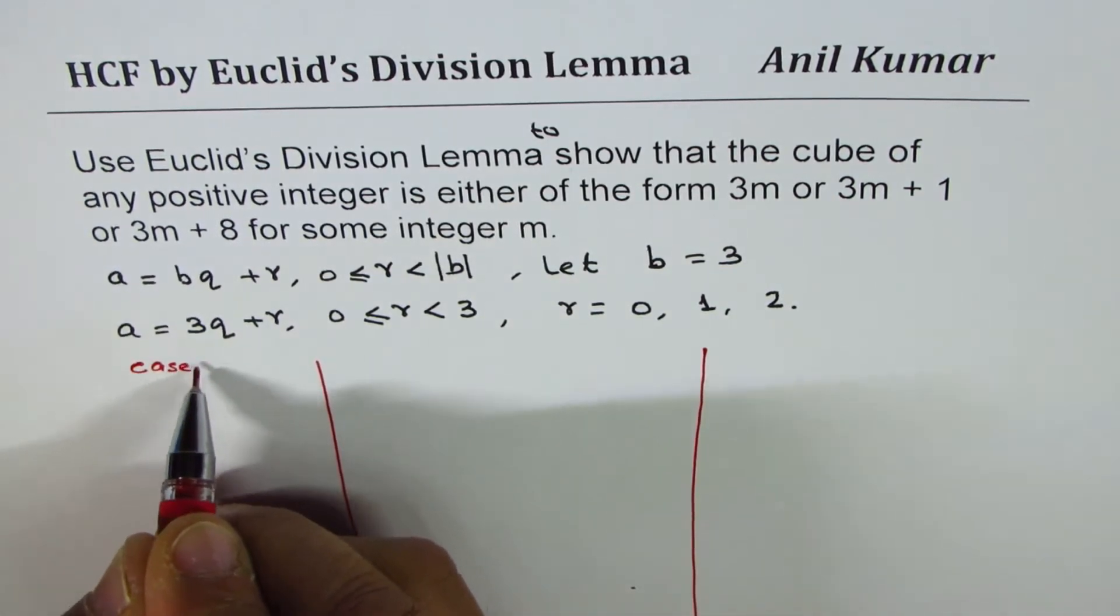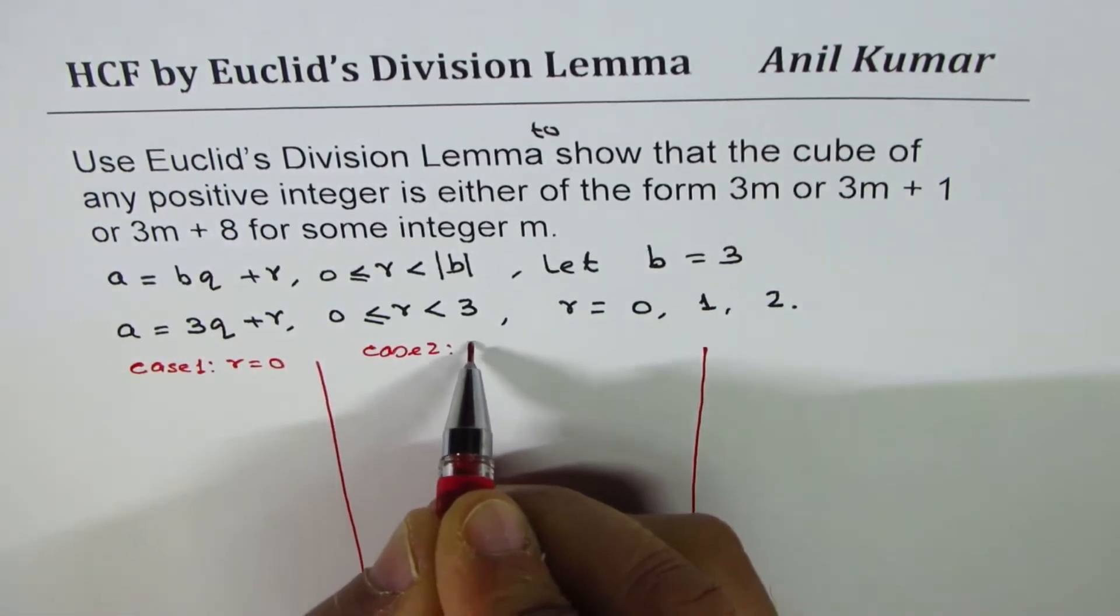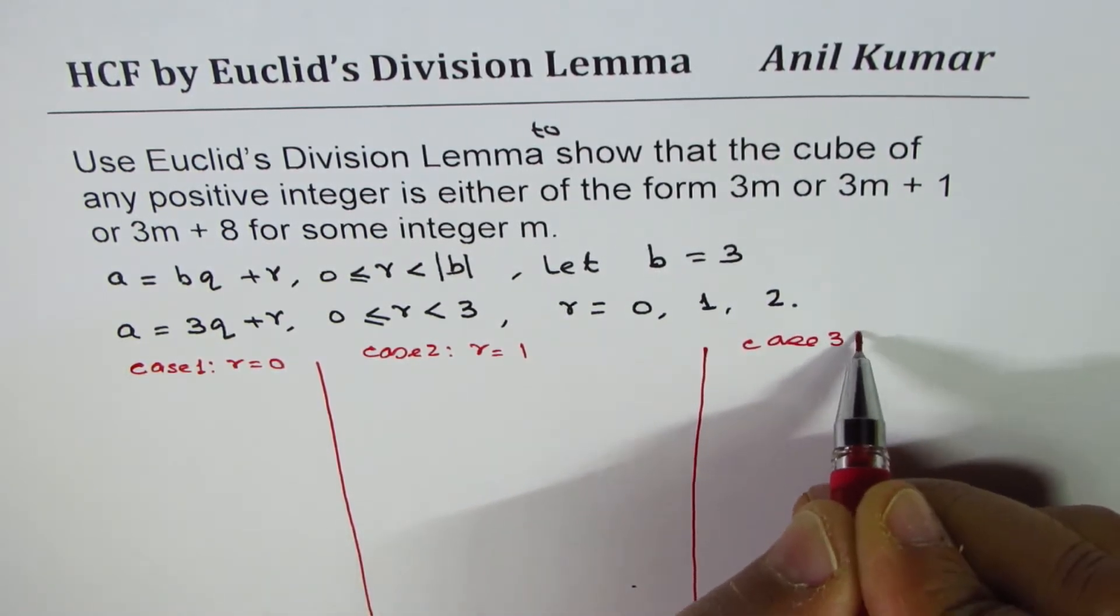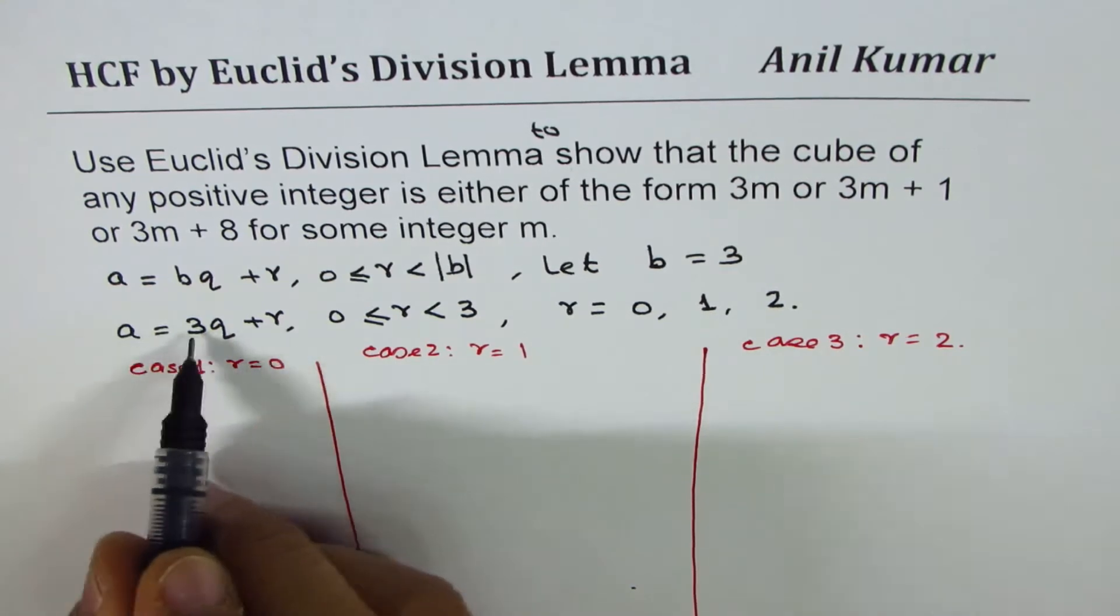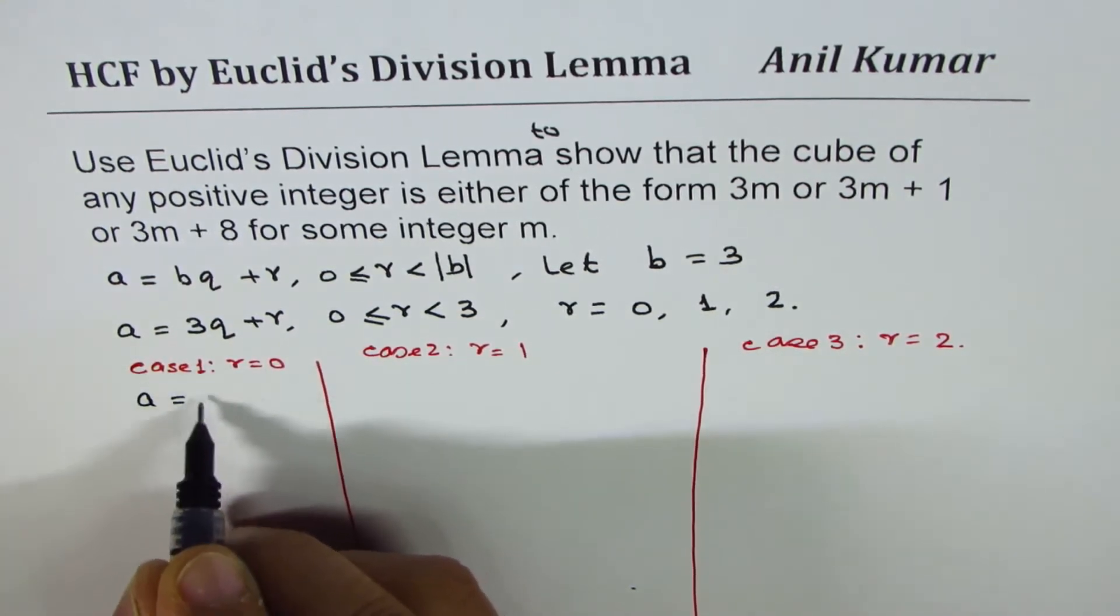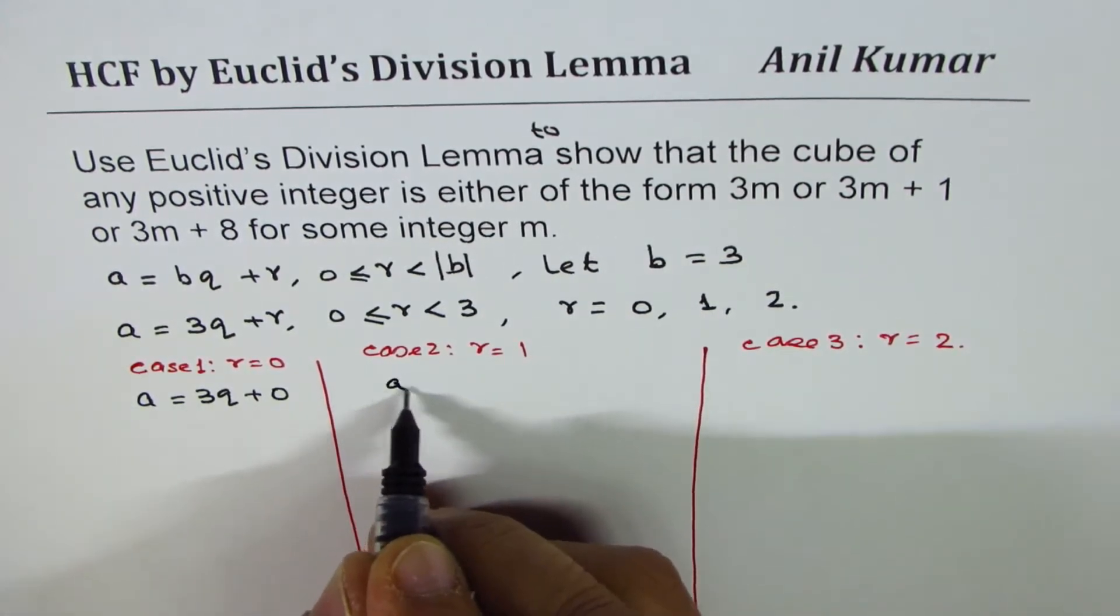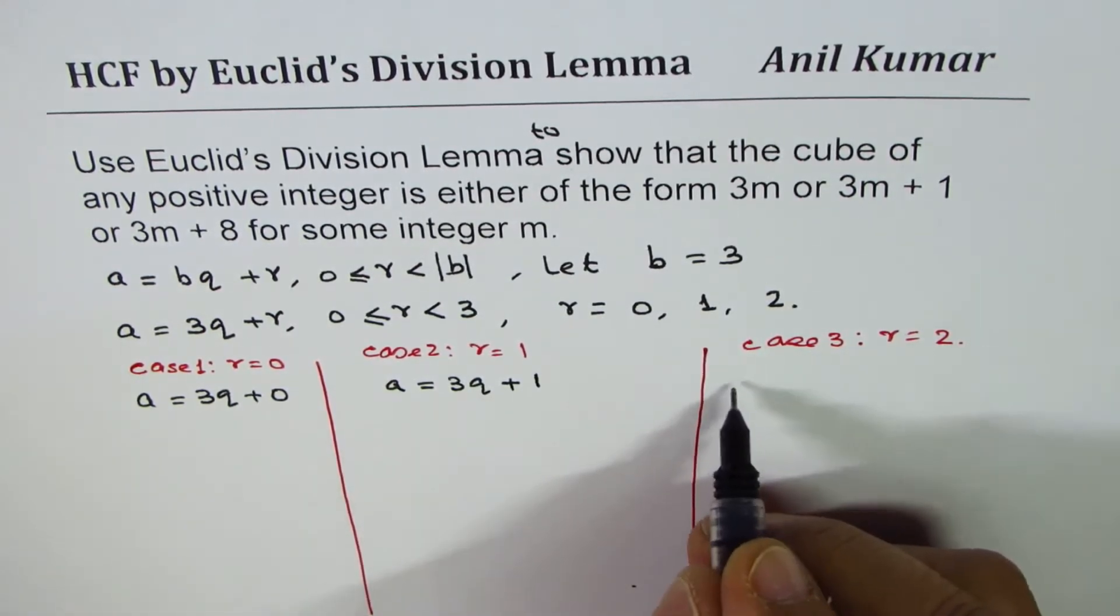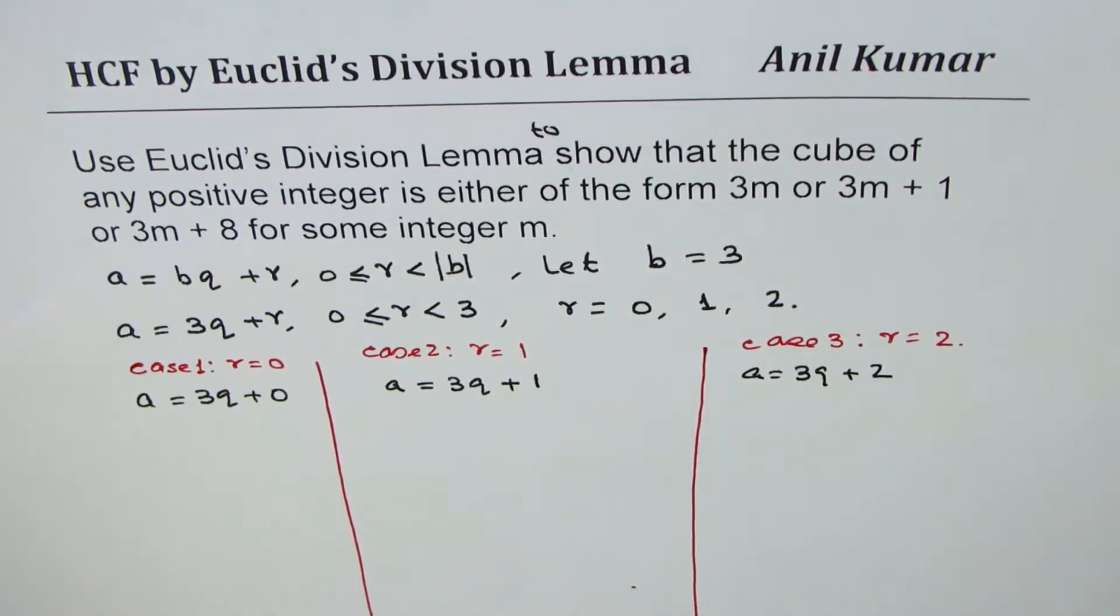So if R is equal to 0, in this equation we can write A equals 3Q plus 0. If R is 1, we can write it as A equals 3Q plus 1. And if 2, then we can write A equals 3Q plus 2. So these are your three different cases.